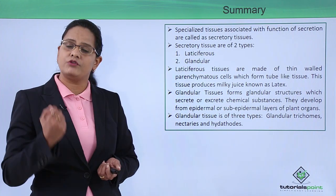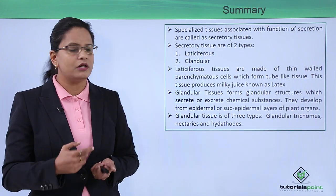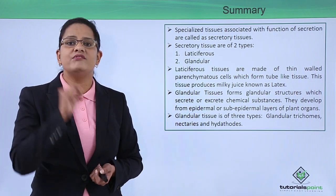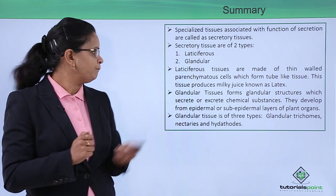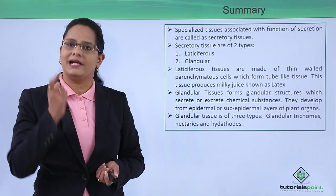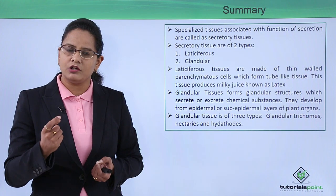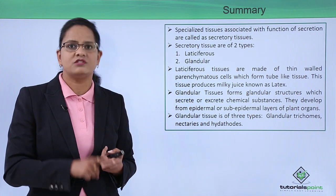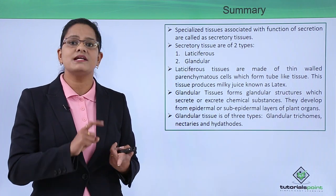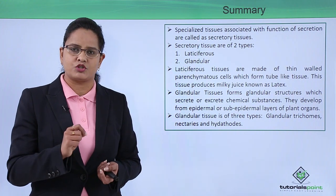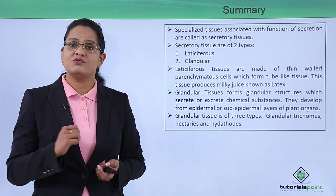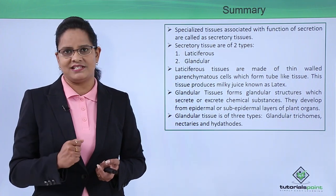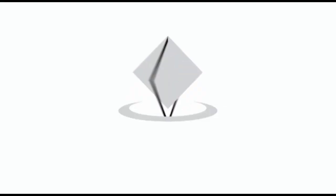To summarize: specialized tissues with the function of secretion are known as secretory tissues. They are of two types — latticiferous tissues, which are tube-like cells with a duct releasing milky latex, and glandular tissues, which form glandular structures and can be unicellular or multicellular. Glandular tissues include glandular trichomes, nectar-secreting nectaries in flowering plants, and hydathodes which are modified pores that excrete extra water. This concludes the topic of secretory tissues.